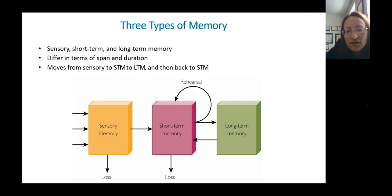There are three kinds of memory, three types of memory, according to the Atkinson-Shiffrin model. These are sensory memory, short-term memory, and long-term memory. And today we will learn about sensory memory.